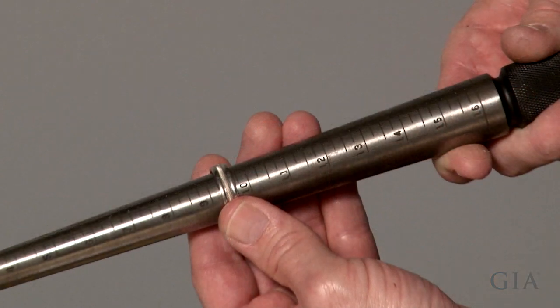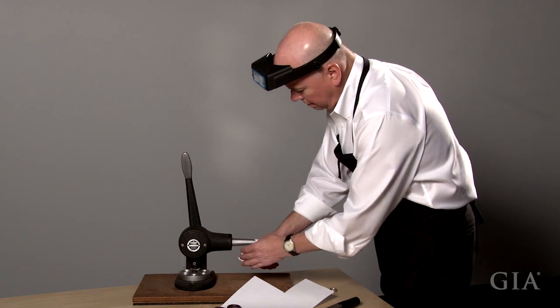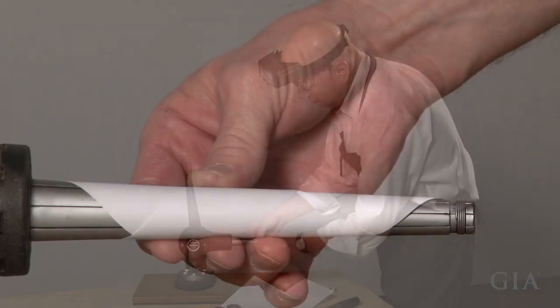Use a common ring stretcher to increase the size to a ten, which because of the convex inner shape will fit like a ten and a quarter. Wrap standard bond paper around the ring stretcher to prevent scratching the inside of the shank.